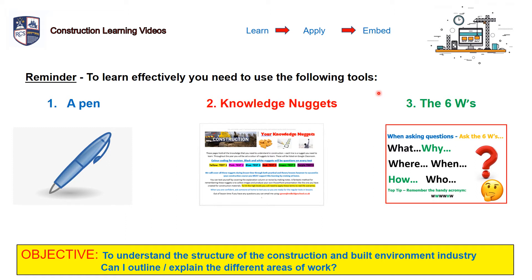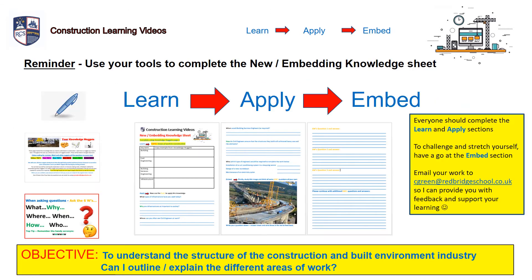Another reminder: you're going to need your pen, your Knowledge Nuggets, and your 6 W's sheet. So get your tools together — get a pen or a pencil, your Knowledge Nuggets and your 6 W's questioning sheet. When you have your tools and your new and embedding knowledge worksheet, you are ready to begin.